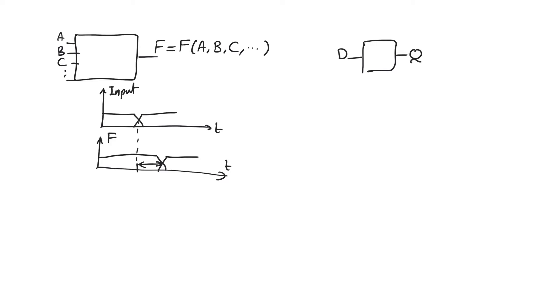We need a signal to indicate whether the output is a combination of the input, or whether the output is preserving an old value. This control signal that switches or multiplexes between these two modes for the output is called the clock signal.